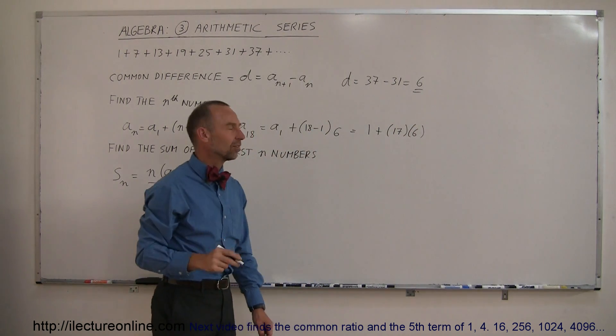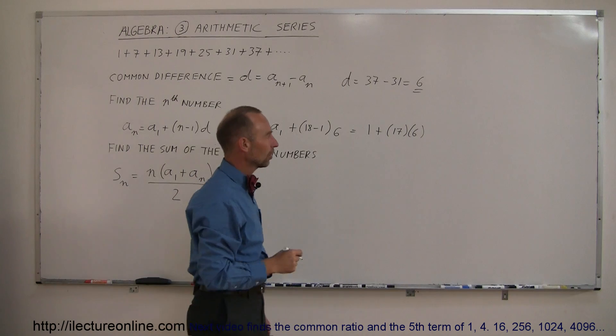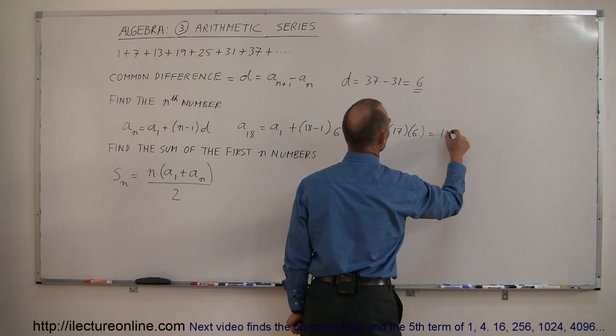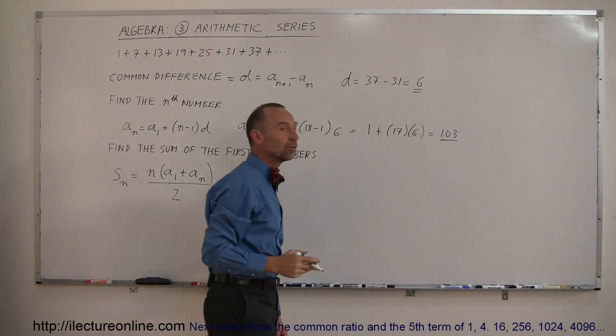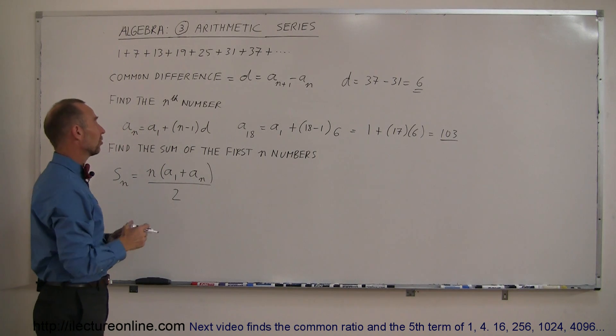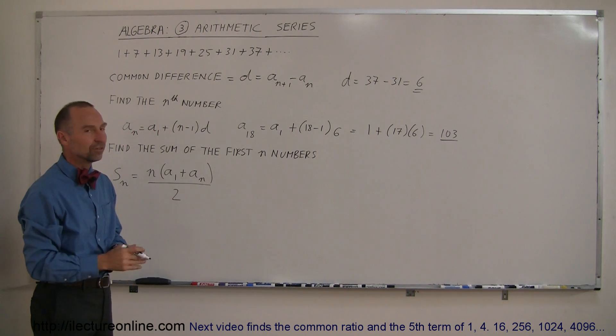6 times 10 is 60, 6 times 7 is 42, that's 102 plus 1, that would be 103. So just like with a sequence, you could still be asked to find the common difference, you could still be asked to find the nth number in the series.